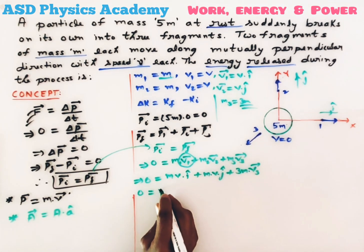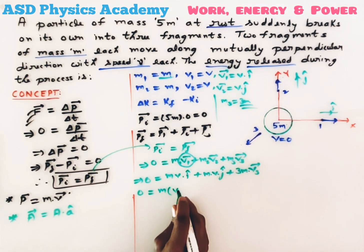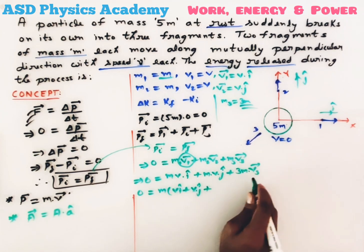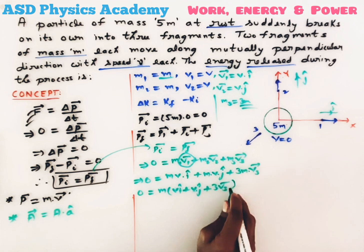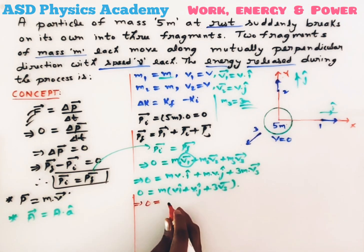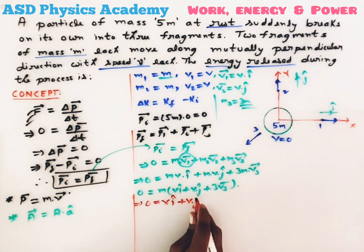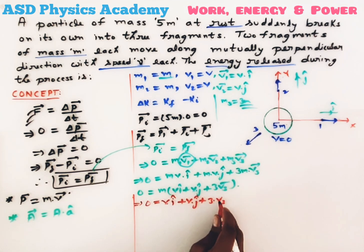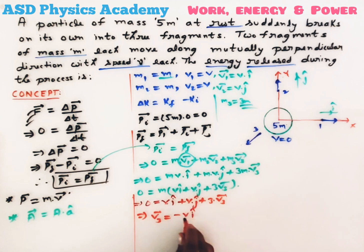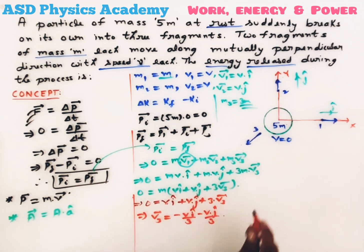So: 0 = m(v·î + v·ĵ + 3·v3). Since mass m cannot be zero, we get: v·î + v·ĵ + 3·v3 = 0. Therefore, the velocity of the third particle is: v3 = −(v/3)·î − (v/3)·ĵ.